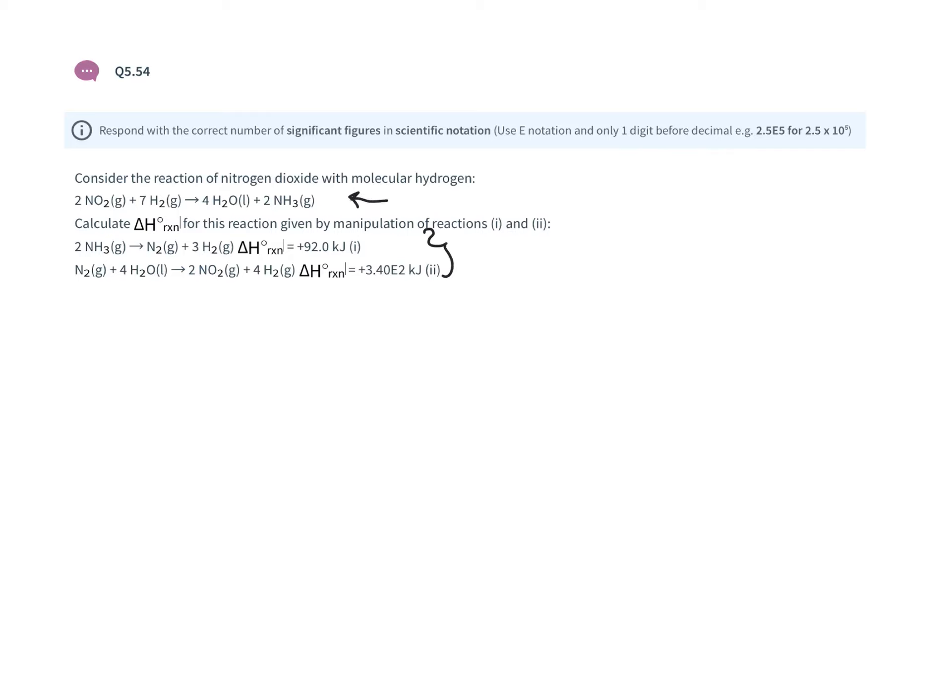Starting with the first reaction, note that ammonia is a starting material, but we want it as a product in the unknown reaction. So we flip the first reaction: N₂ + 3H₂ → 2NH₃. When flipping the reaction, we also flip the ΔH, so it becomes -92 kilojoules.